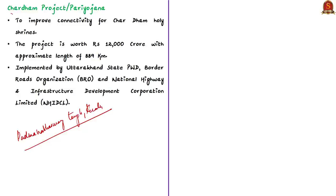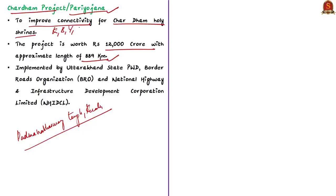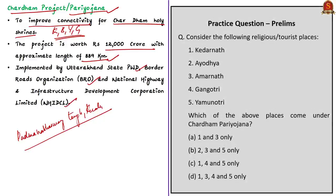The Chardham project, or Pariyojana, is worth around ₹12,000 crores and has an approximate length of 890 kilometers. It aims to improve road connectivity for the four Chardham temples — Kedarnath, Badrinath, Yamunotri, and Gangotri. The project is being implemented by the Uttarakhand State Public Works Department, Border Roads Organization, and National Highway and Infrastructure Development Corporation Limited.